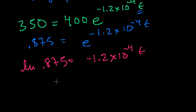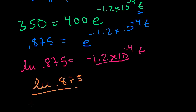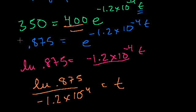And so t is equal to this divided by 1.2 times 10 to the minus 4. So the natural log of 0.875 divided by minus 1.2 times 10 to the minus 4 is equal to the amount of time it would take us to get from 400 grams to 350.